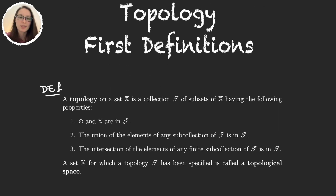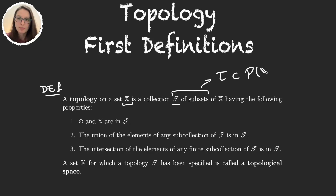We say that a topology on a set X is a collection tau of subsets of X. This tells us that tau is a subset of the parts of X that has the following properties.